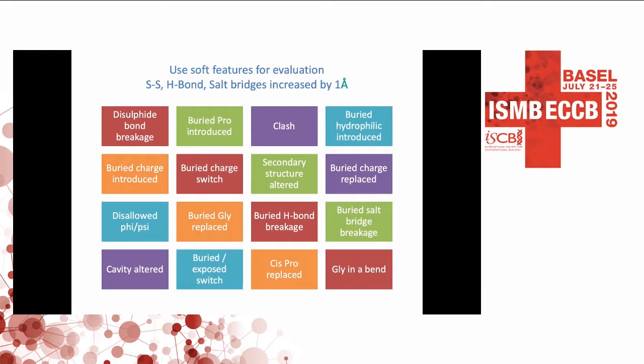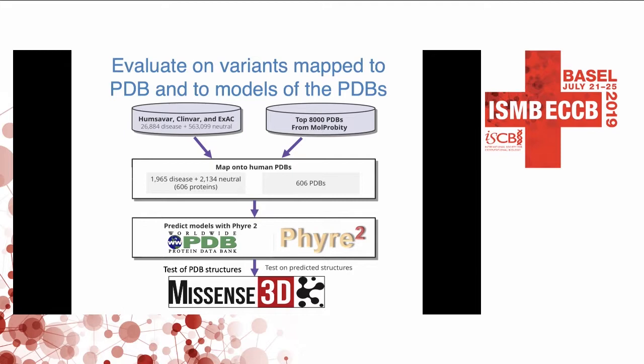To evaluate the method on both structures and FIRE-generated models, they took a set of 8,000 structures from MolProbity — high-quality structures — and combined that with data on variants from HMSAVAR, ClinVar, and ExAC. Mapping those on gives a dataset of 606 structures, with just under 2,000 disease-associated variants and just over 2,000 neutral variants. MissSense3D is then applied to all of those on both the structures and FIRE2-generated models.